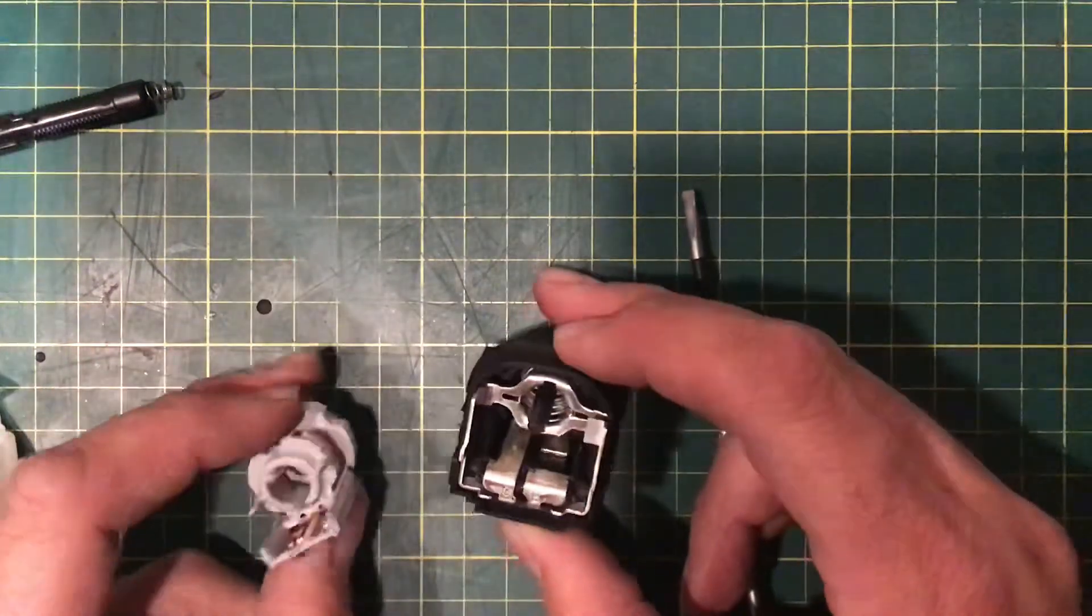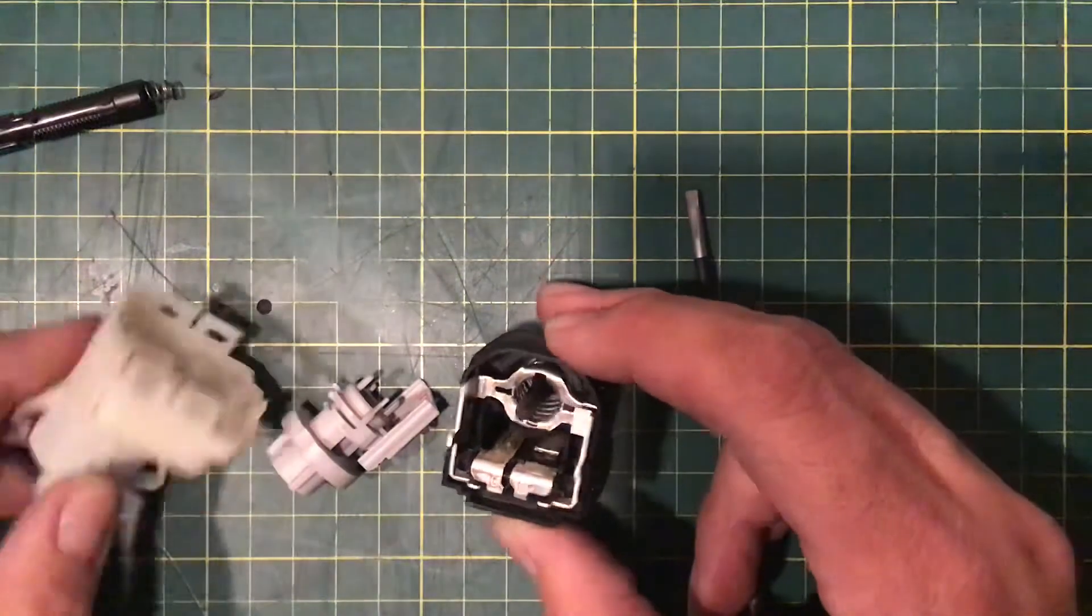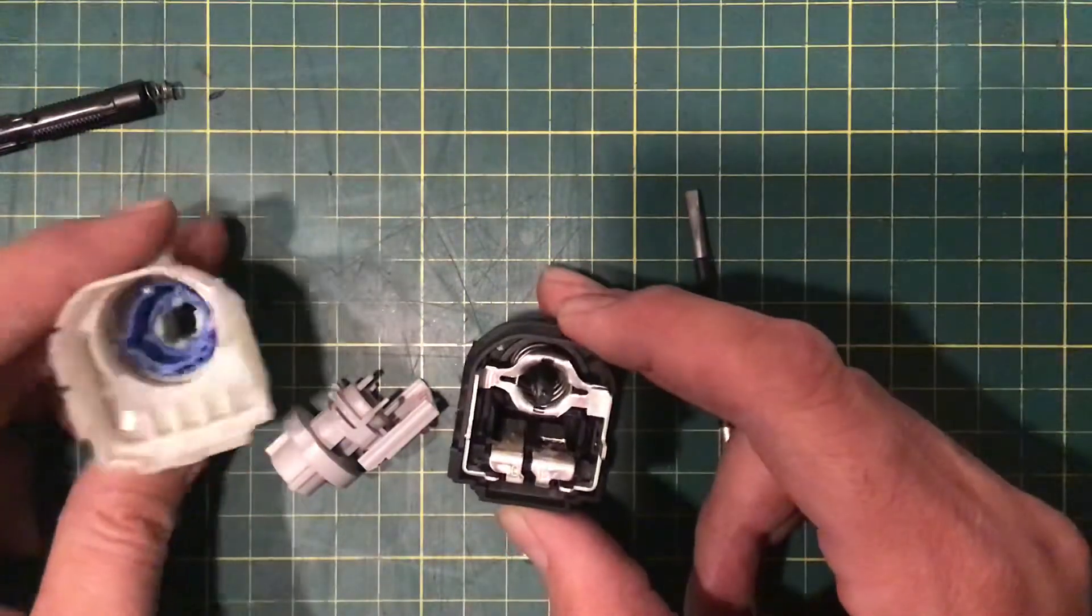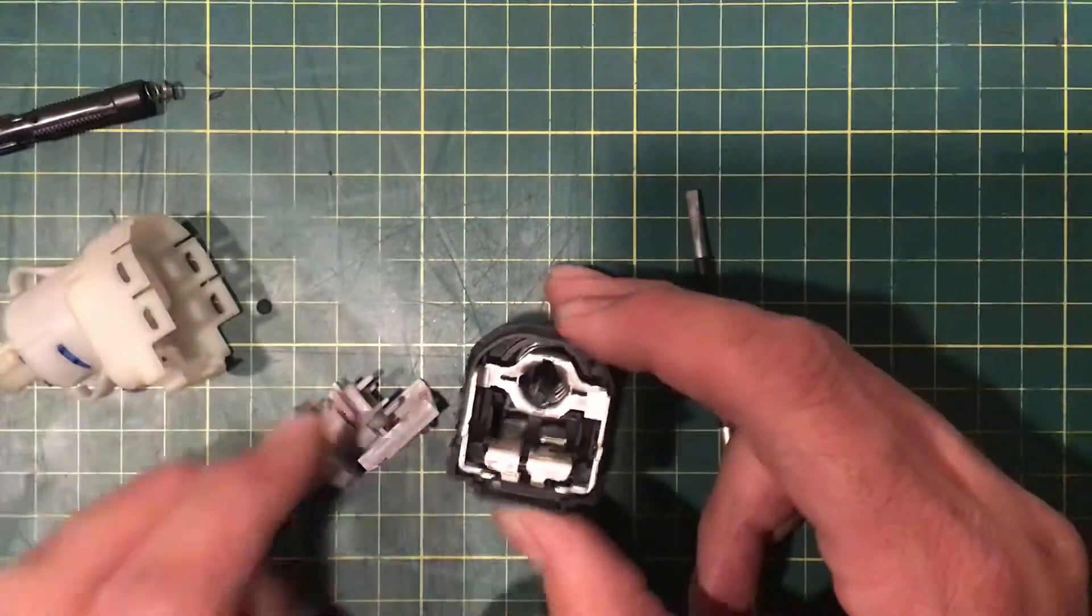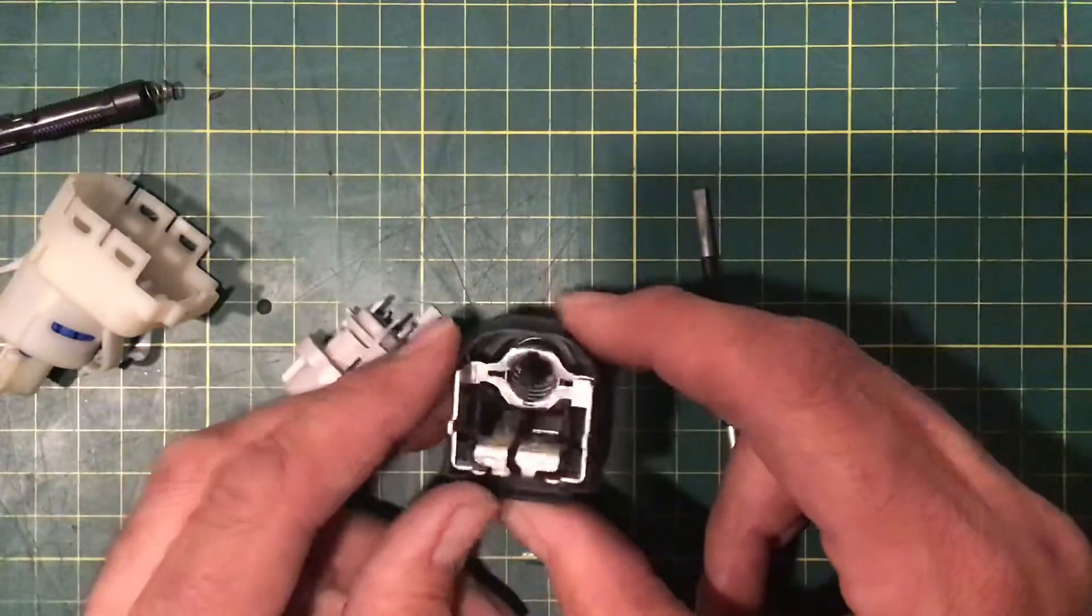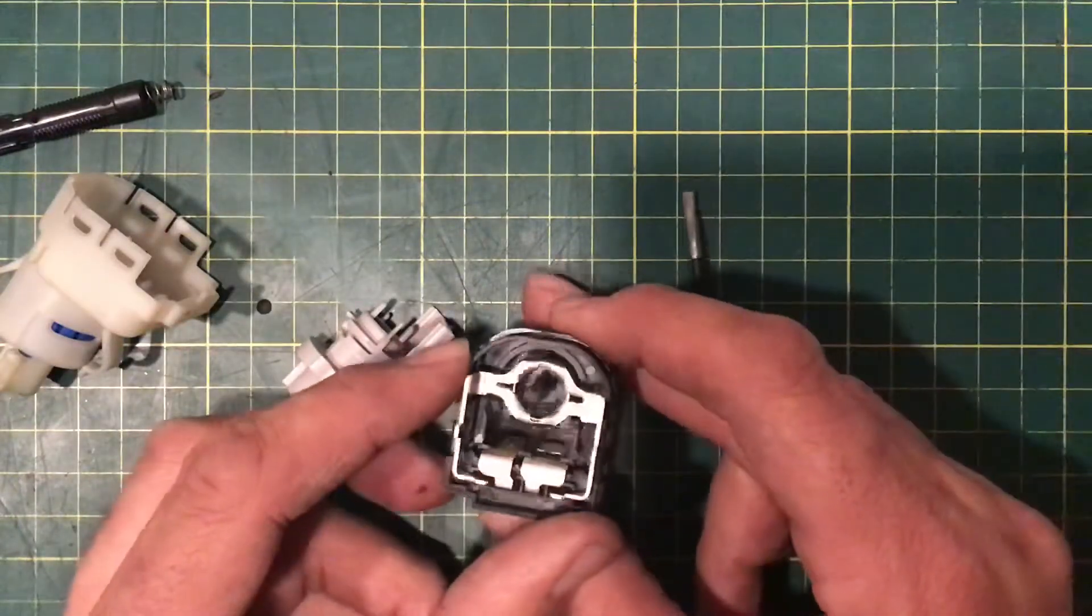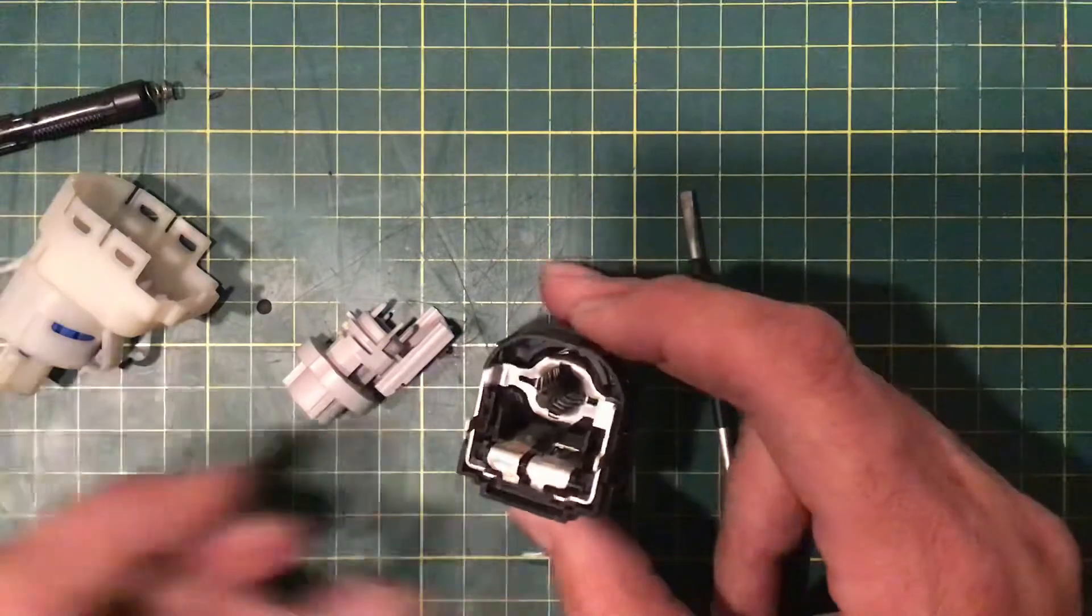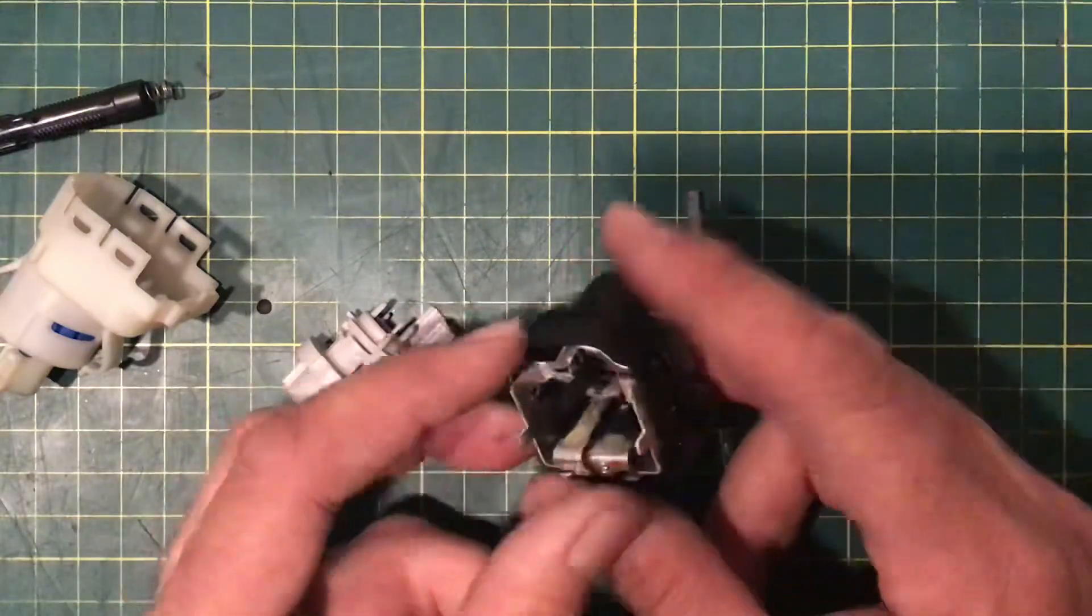So I guess the simple answer is for less than 10 quid, just change one of these. It's a two minute job. Change one of these every time that happens or take it apart and keep cleaning it. But that's why it works the way it does. That's why it's got four terminals on the back.